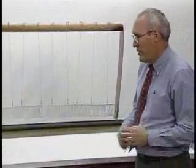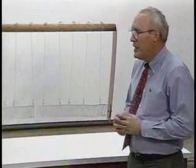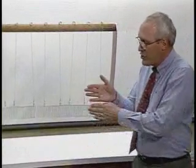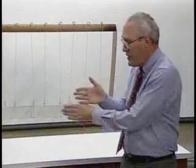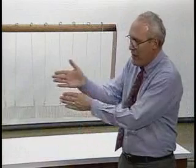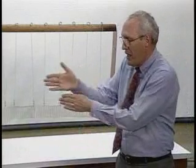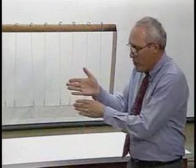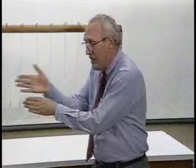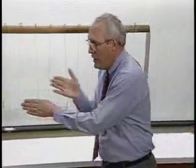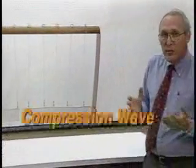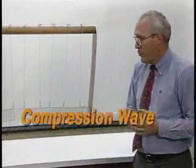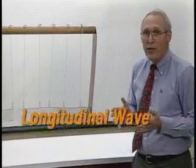There are two kinds of waves that we can illustrate with this slinky. In the one case, if we disturb the medium so that it moves back and forth this way — the little pieces of metal of the slinky jiggling back and forth along that line — and the disturbance then moves along that same line that the jiggling is occurring along, then the wave is said to be a compression wave, or a longitudinal wave.